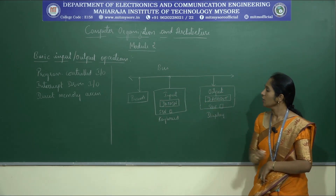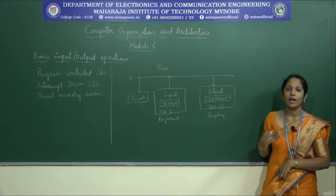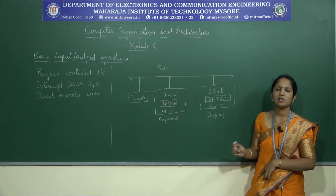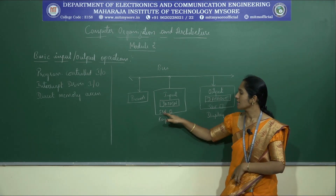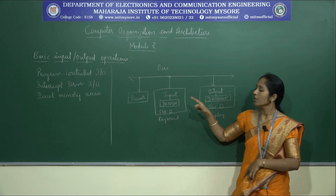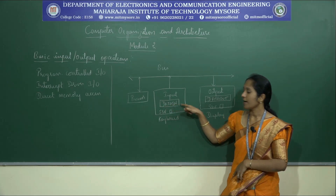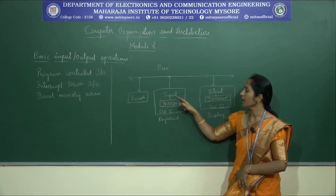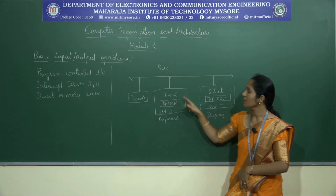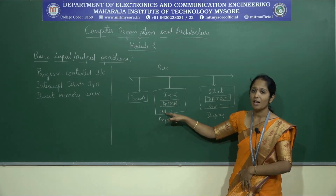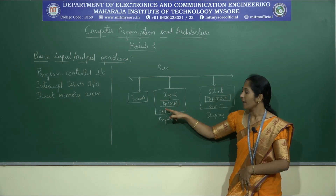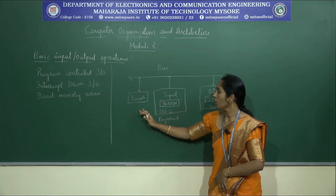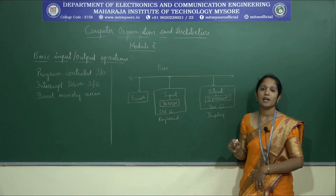Assume the task is accepting a character and displaying it on the monitor. Whenever a key is struck on the keyboard, SIN will be made high, indicating to the processor that there is a valid character in data-in. As soon as a character is pressed, it is converted into ASCII code and stored in the data-in register. The processor continuously monitors the SIN value. Once SIN is high, it reads the character from data-in and stores it in a processor register.